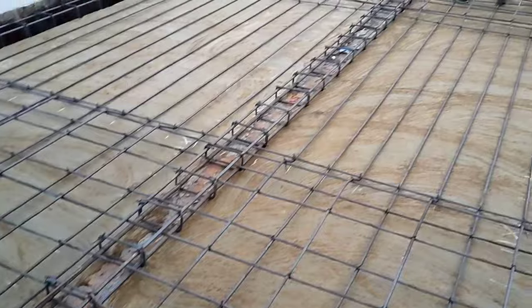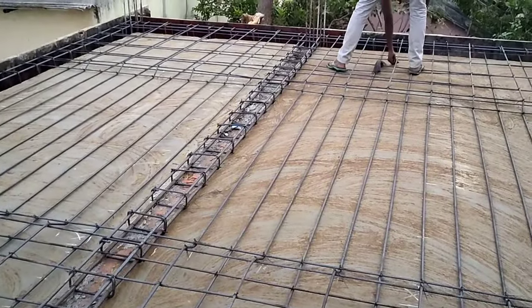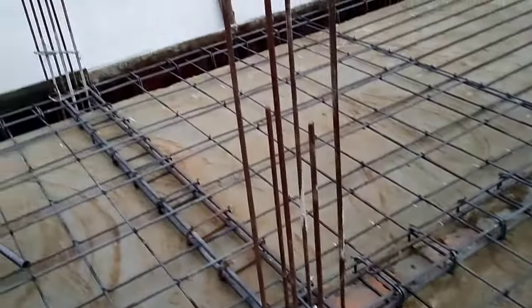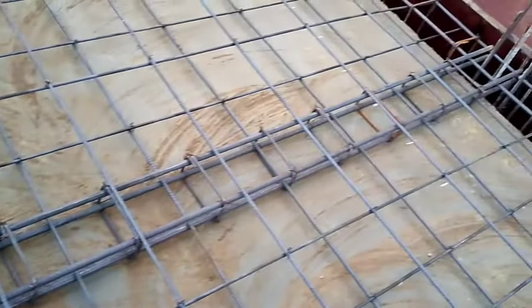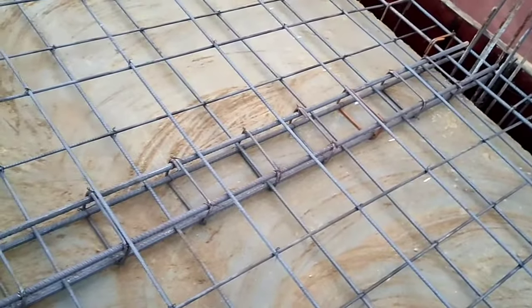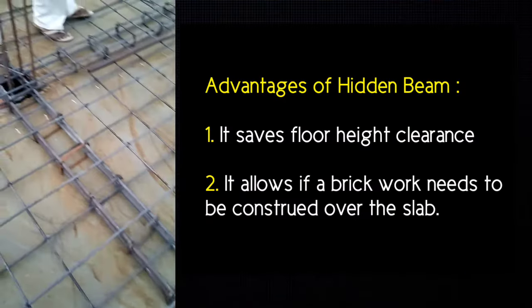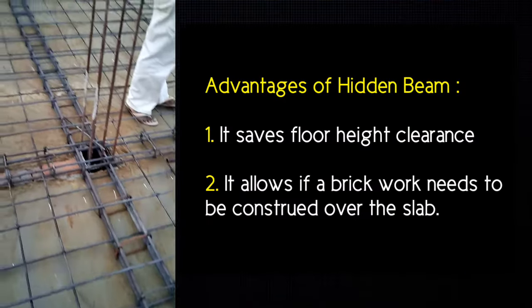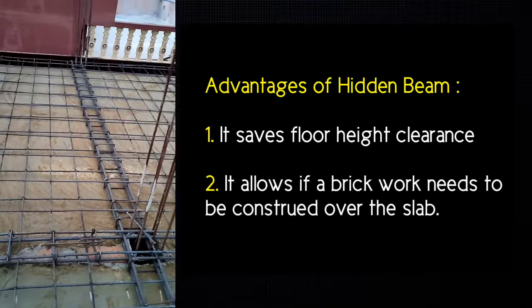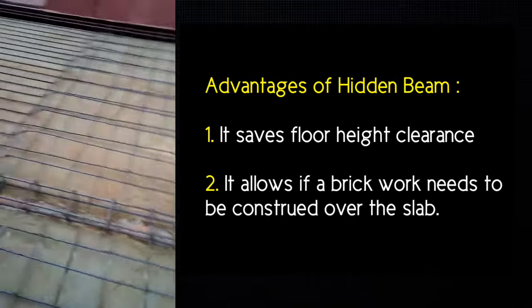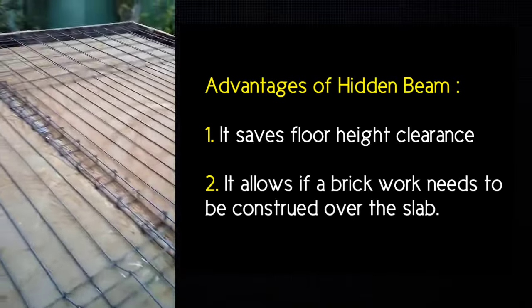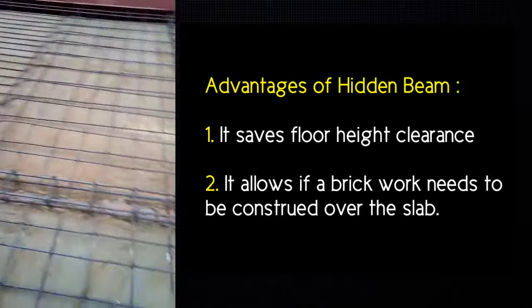If there is any chance of brickwork being constructed over the slab, you should place a hidden beam there, as it disperses the wall load imposed on the slab. This is the major advantage of hidden beams. If an interviewer asks about the importance of hidden beams, you should say it saves floor height clearance and allows brickwork to be constructed over the slab.